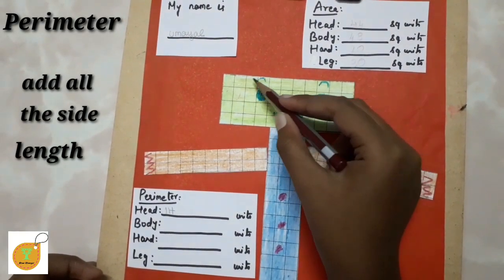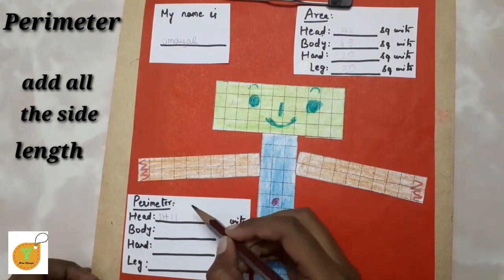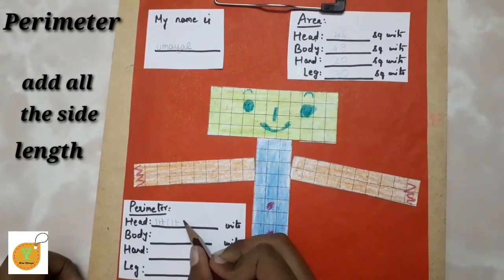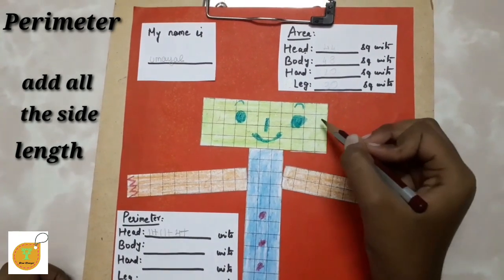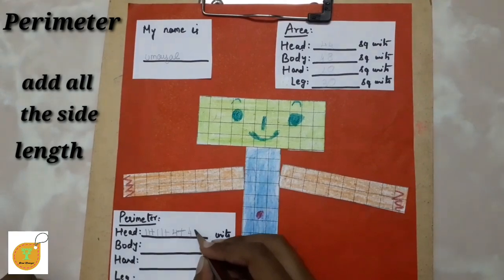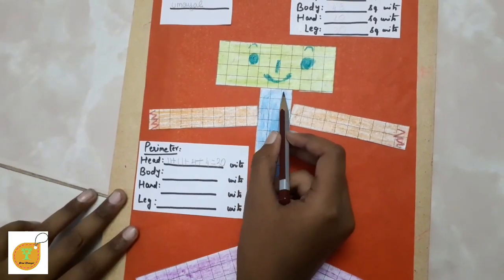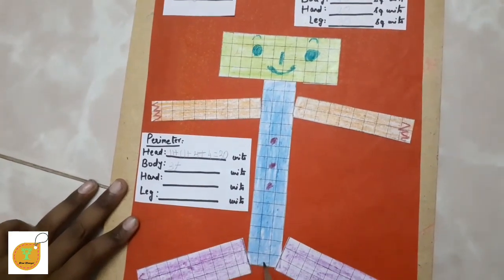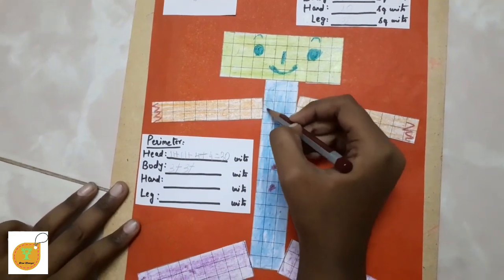You can see the perimeter — the distance around the shape. The square is 11 plus 4 plus 11 plus 4. You can see the body count.